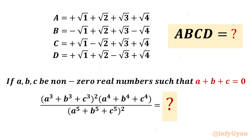Welcome back to Infigyan, my dear friends. In this very exciting video on algebraic expressions, we are going to take up two challenges. First one: A, B, C, D is known to us — given, we have to find out the product of A, B, C, and D. Second question: if A, B, C are non-zero real numbers and A plus B plus C equals zero, then we have to evaluate the given expression. So let's get started with question number 1.